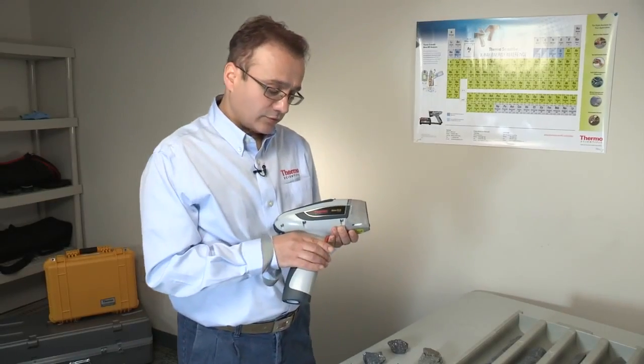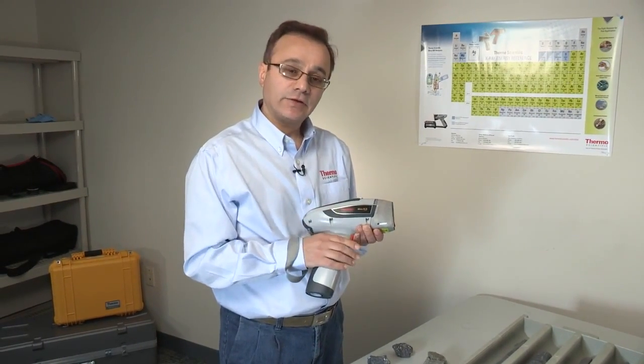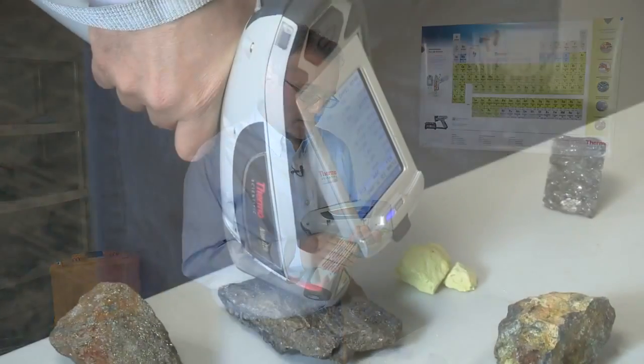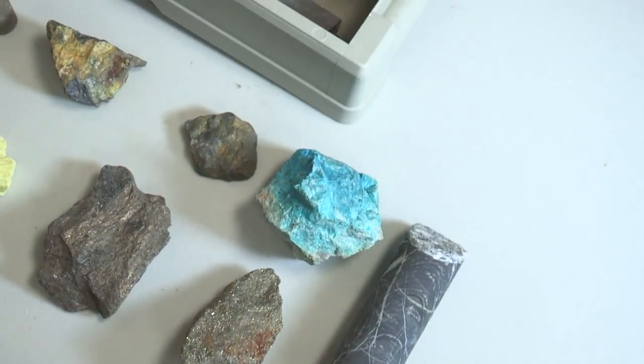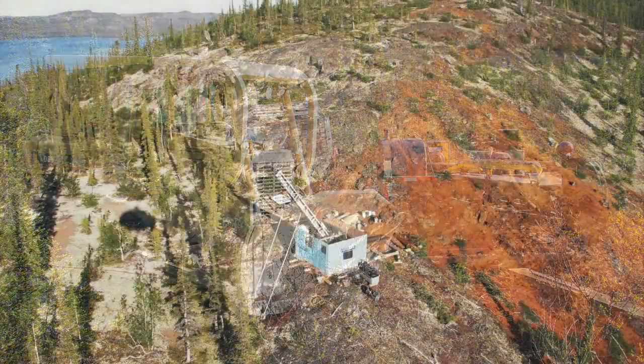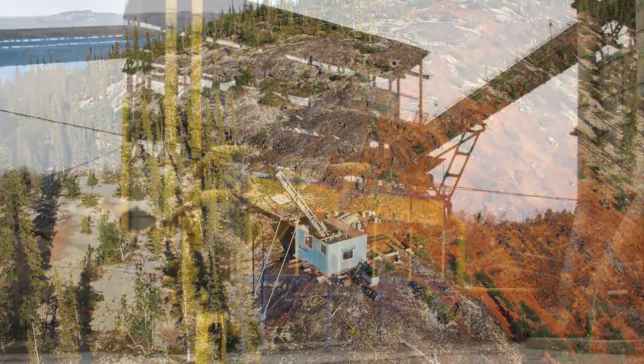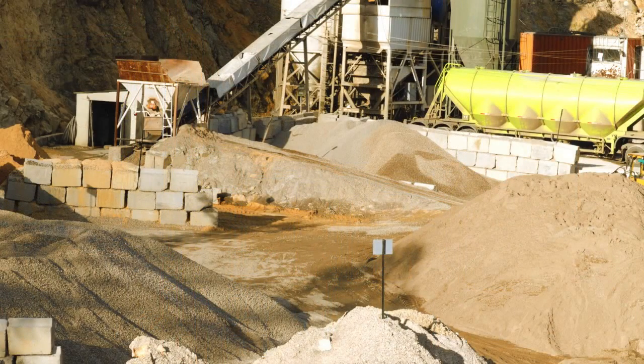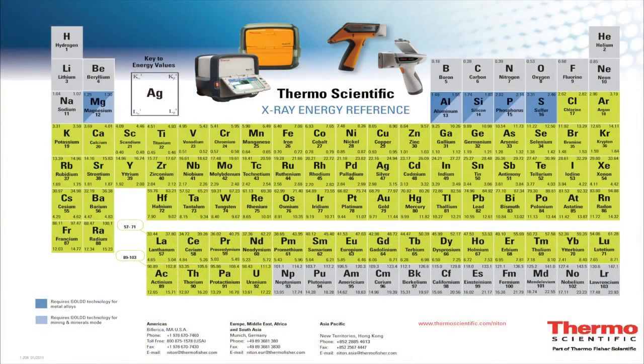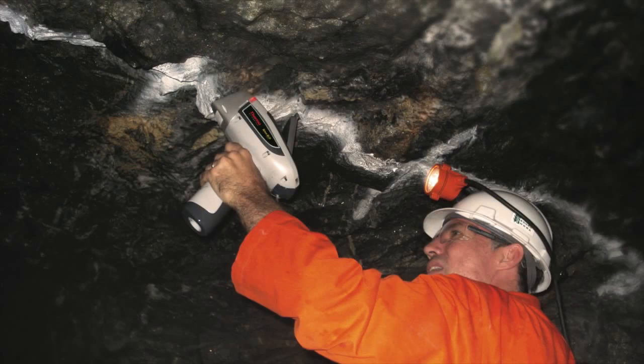Today, I'm going to introduce the Thermo Scientific Niton XL3T Gold. It can be used on any type of samples such as rocks, minerals, soils, and even core samples. It can be used at any stage of mining activity from grassroot exploration to mineral processing and even grade control in any type of deposit. You can analyze elements from magnesium to uranium and even rare earth elements using this instrument.